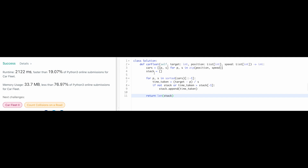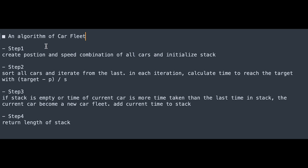Step-by-step algorithm summary: Step 1 — create a position-speed combination of all cars and initialize the stack. Step 2 — sort all cars and iterate from the last; in each iteration calculate time to reach the target as (target - position) / speed. Step 3 — if the stack is empty or the current car's time is greater than the last time in the stack, the current car becomes a new car fleet and its time is added to the stack. Step 4 — return the length of the stack. I hope this video helps!